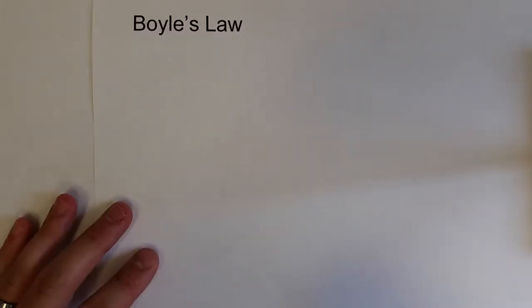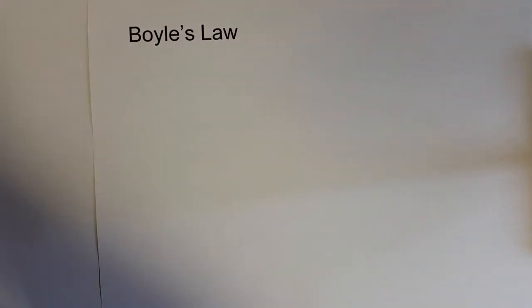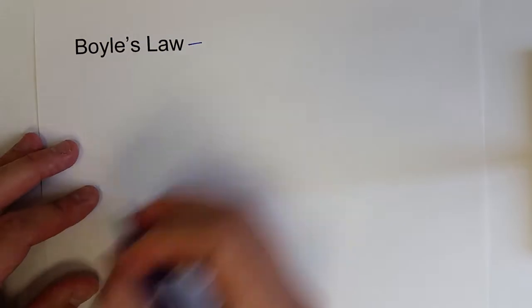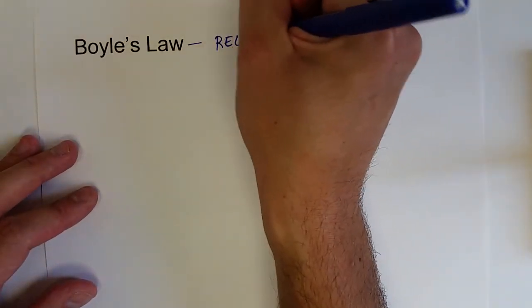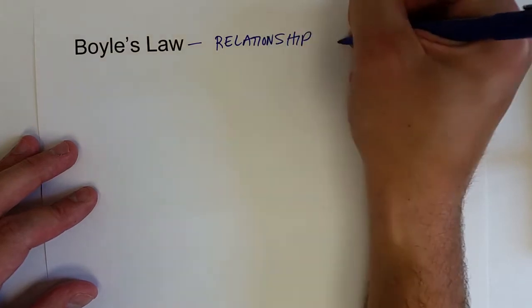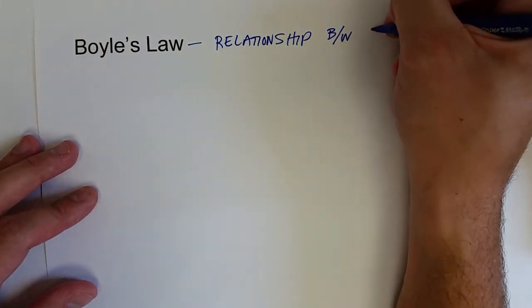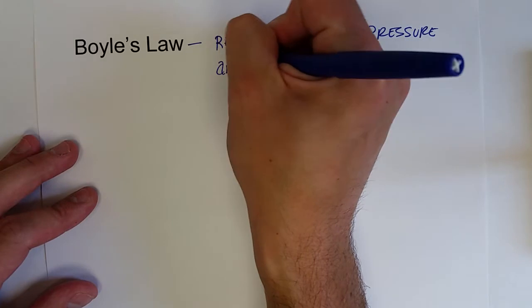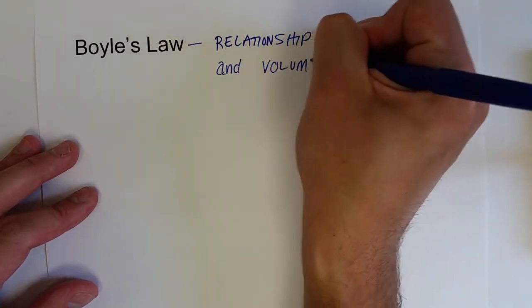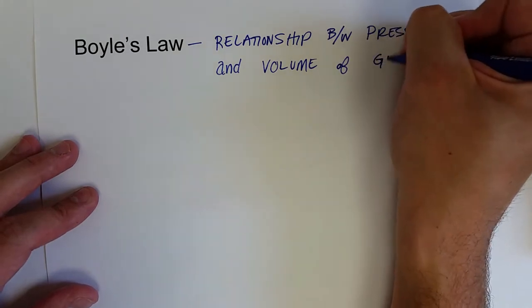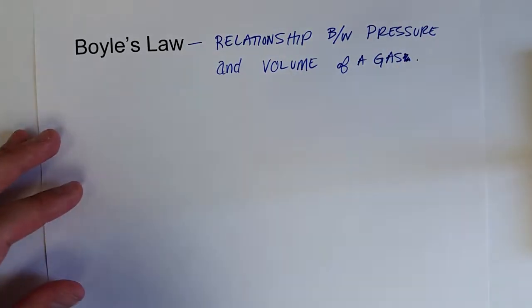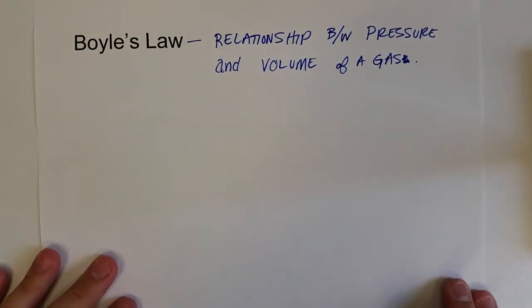Now we can talk about how different properties of gases affect each other, and these are summarized in what is known as the gas laws. The first gas law we'll talk about is Boyle's law, which tells us the relationship between pressure and volume of a gas, with everything else being constant.